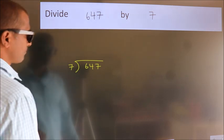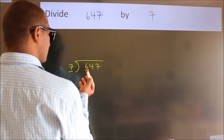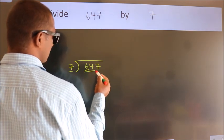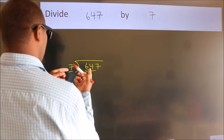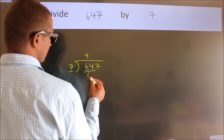Next. Here we have 6, here 7. 6 is smaller than 7. So we should take two numbers, 64. A number close to 64 in the 7 times table is 7 nines, 63.